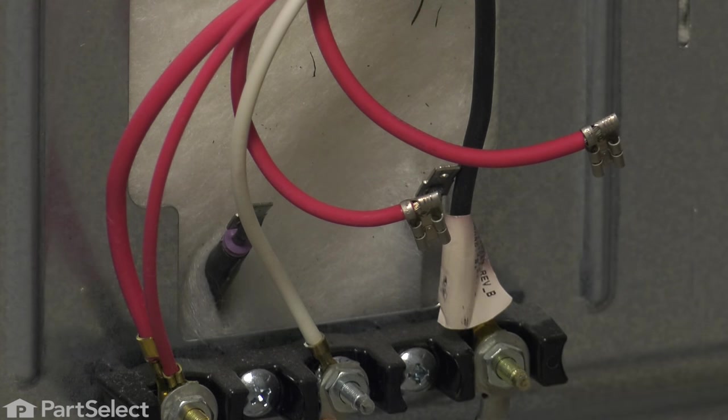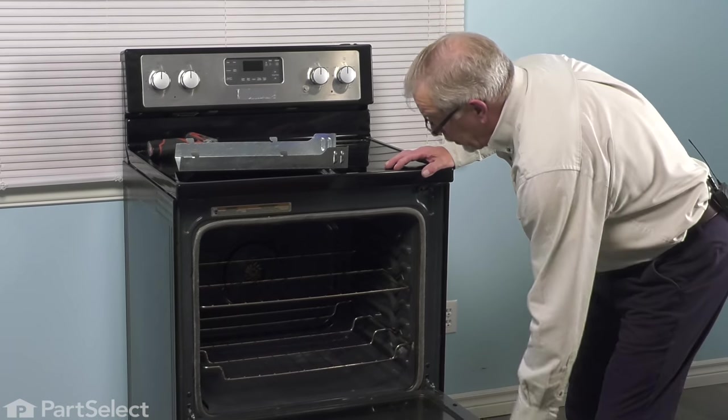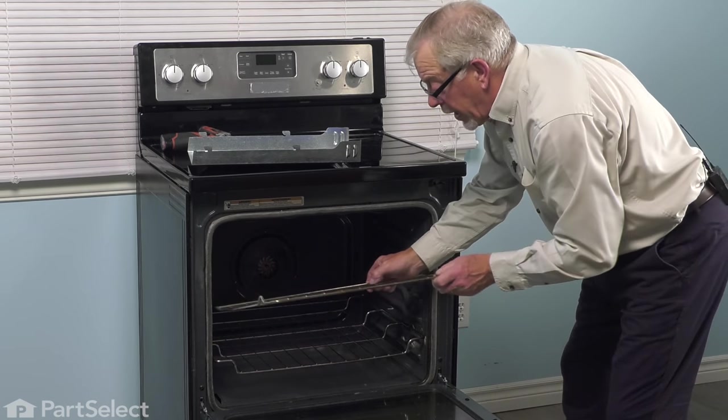We'll go to the front of the range where we can remove the oven bottom. At the front of the range, we're going to open up that door. We'll just remove the racks.